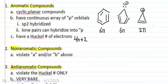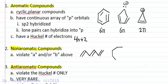Non-aromatic compounds violate either the cyclic requirement — such as hexatriene — or the planarity requirement. If we look at cyclooctatetraene, with 1, 2, 3, 4 double bonds in an 8-membered ring like a stop sign, this compound is not anti-aromatic.